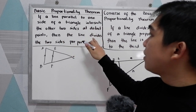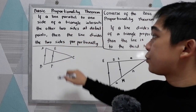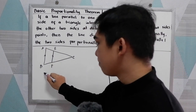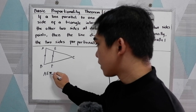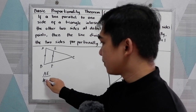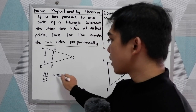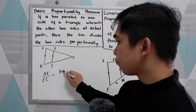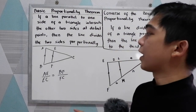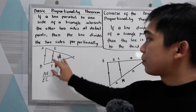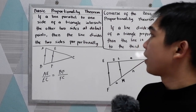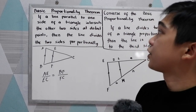Then the line divides the two sides proportionally. So we have AE over EC, that is equal to BF over FC. The two sides are divided proportionally according to our basic proportionality theorem.